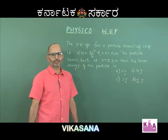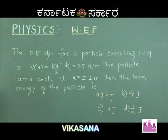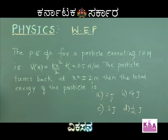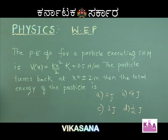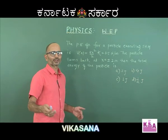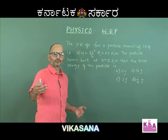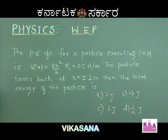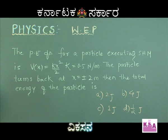One more beautiful problem on work-energy, connected with simple harmonic motion. The potential energy function for a particle executing SHM is V(x) = Kx²/2, where K is 0.5. The particle turns back at x equals plus or minus 2 meters — those are the extreme positions where velocity becomes 0. Plus 2 is one extreme and minus 2 is another extreme.